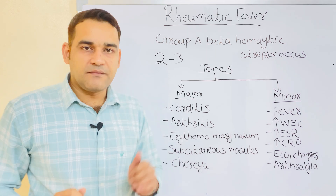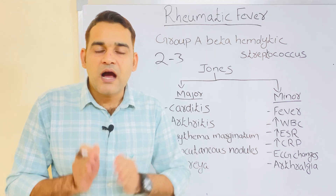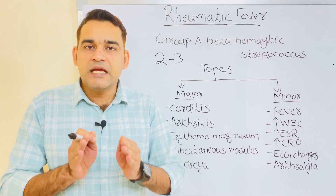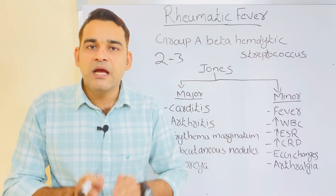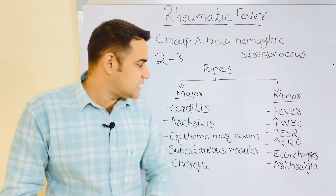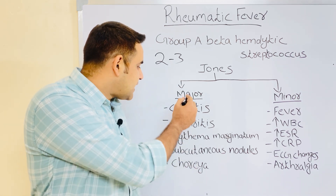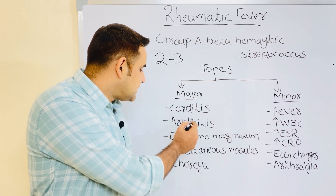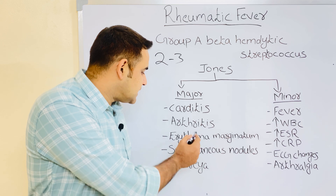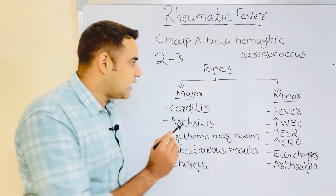Next is chorea, which means involuntary body movements. So the major criteria are: carditis, arthritis, erythema marginatum, subcutaneous nodules, and chorea.